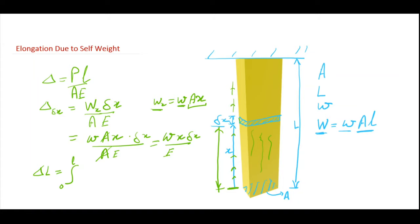That is here at top, that is at L, at a distance L. So I am varying x from 0 to L, so I will get in the integration. So when I integrate it and put the limits, I get the term w L square by 2 E.